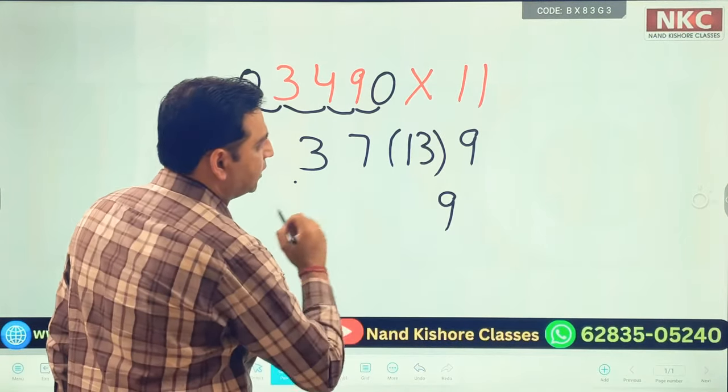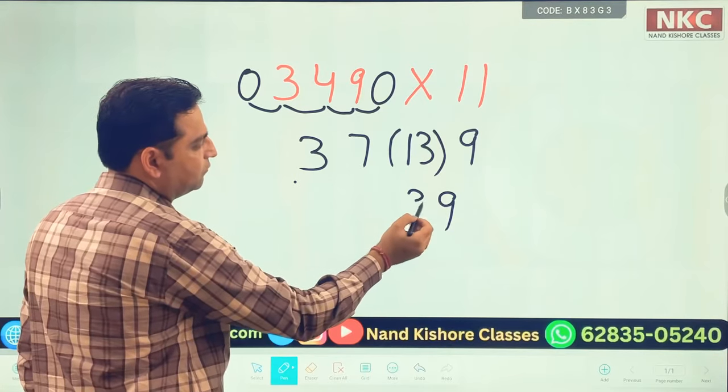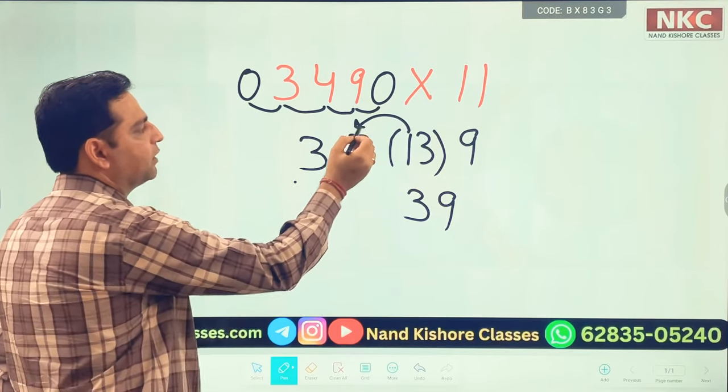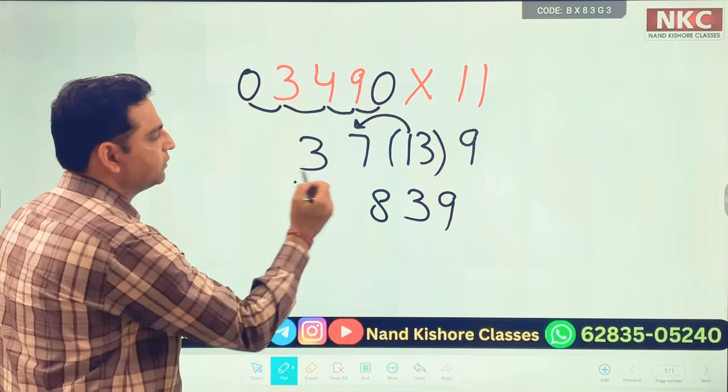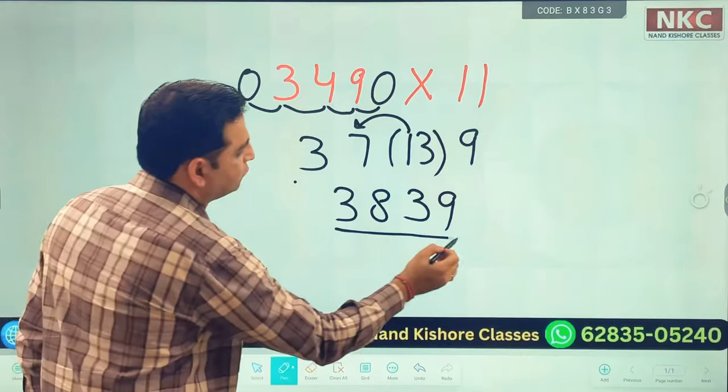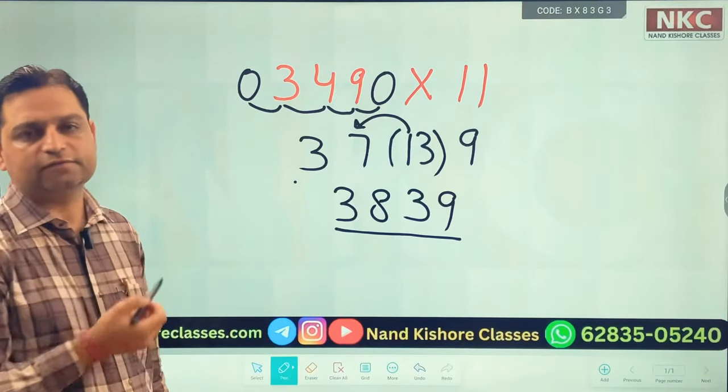Final answer: we write 9, from 13 we will write 3 here and 1 will be added to the next value. 1 plus 7 is 8. Then 3 as it is. So 3, 8, 3, 9 is the final answer.